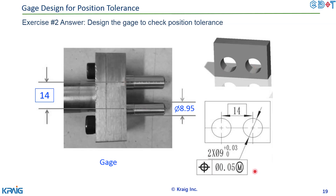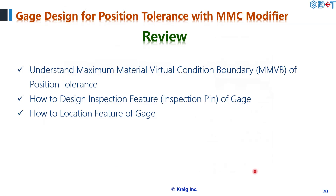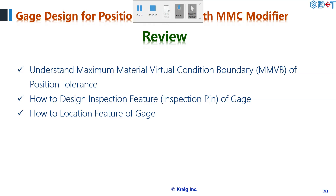In summary, this module introduced MMVB (Maximum Material Virtual Condition Boundary) related to position tolerance — the key concept for designing gauges for position tolerance. We covered several examples of how to make checking pins, and how to create the gauge location features to locate the part. Thanks for watching and see you in the next video.